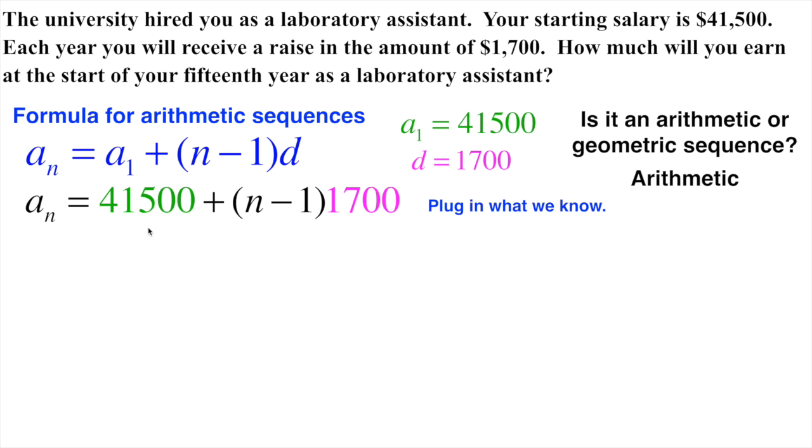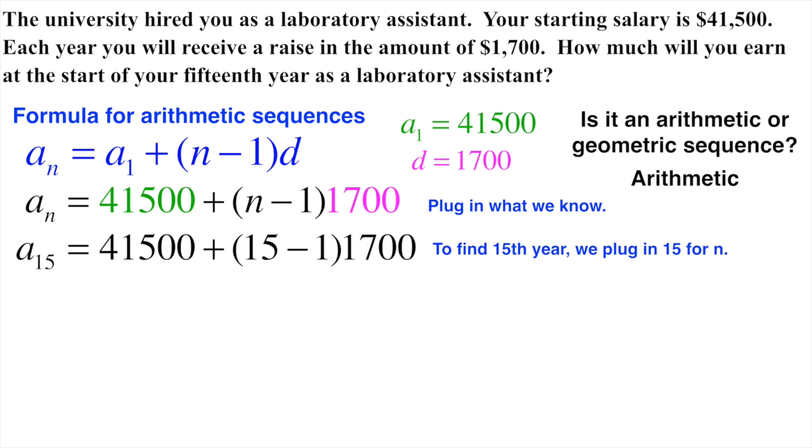So now I plug both of those in. This is my a₁, my starting amount, $41,500. $1,700 is how much I go up every single year. Now this one asks how much we will earn at the start of our 15th year. So now what I'm going to do is plug in 15 for n, right here and right here. I've done that here. Now to find out how much I'm going to make for the 15th year, all I need to do is simplify what's on the right-hand side.